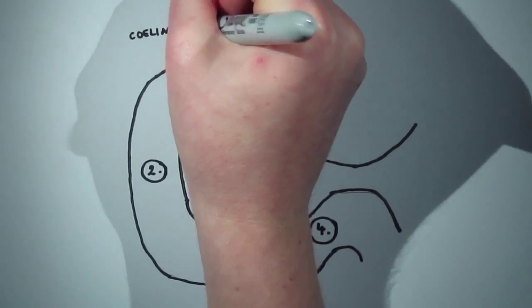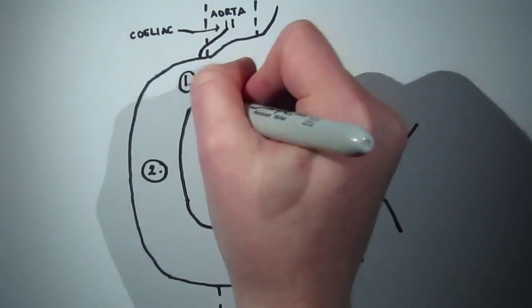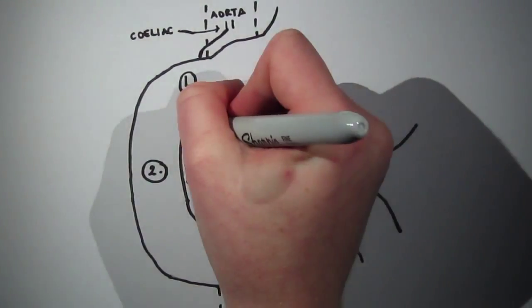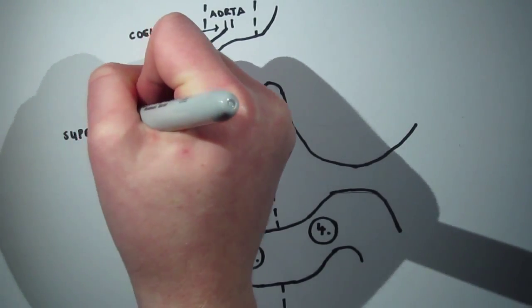The superior pancreaticoduodenal artery arises from the celiac trunk and splits into an anterior and posterior branch, supplying the proximal part of the duodenum.